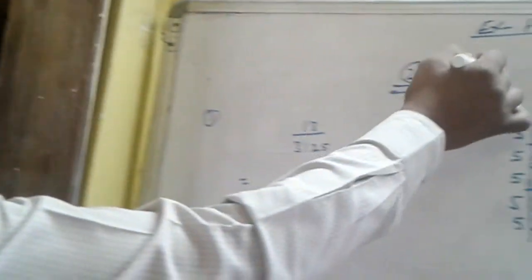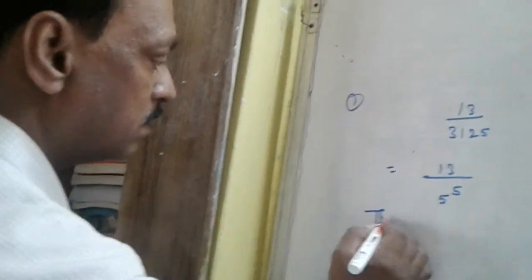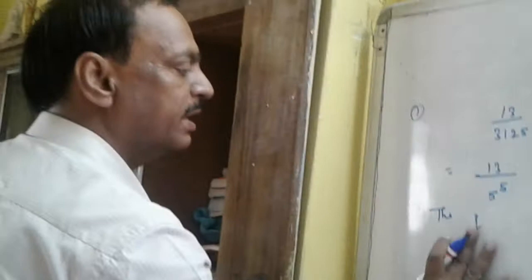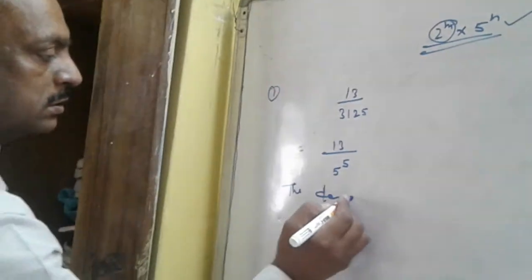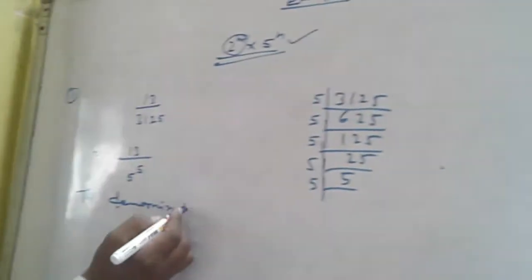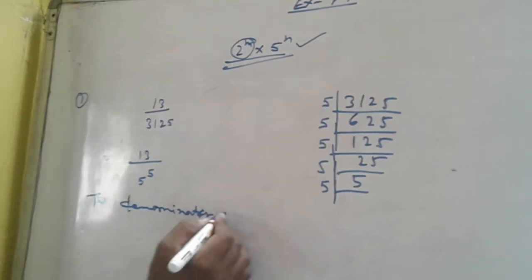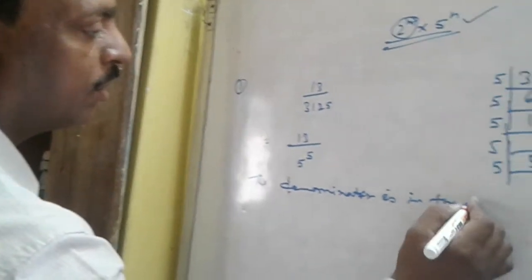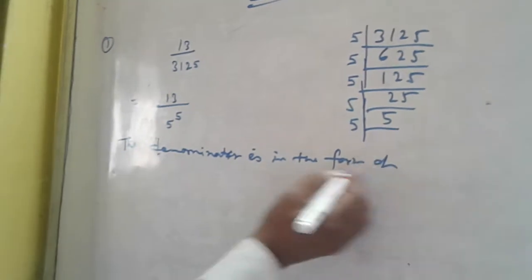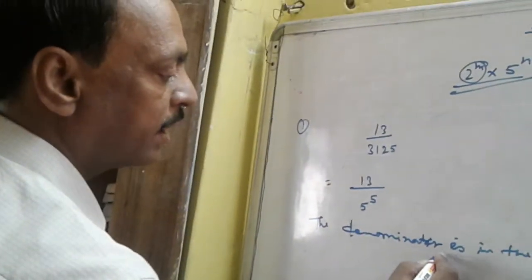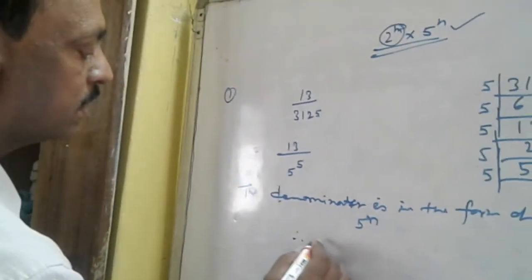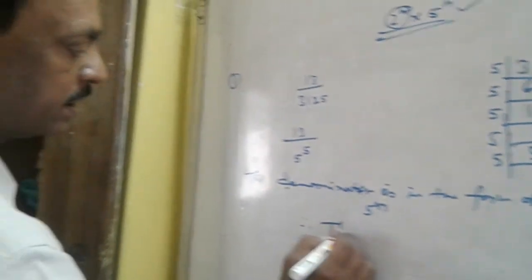So in this form, this is not 2, but it is 5. So the denominator is in the form of 5 to the power n. And therefore, the number is rational.